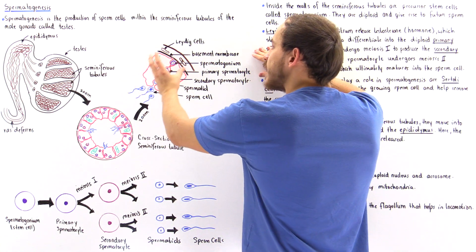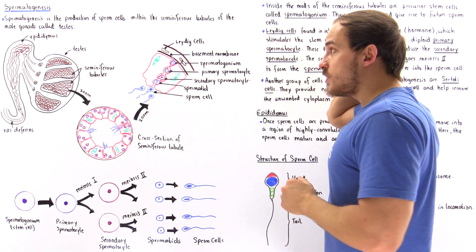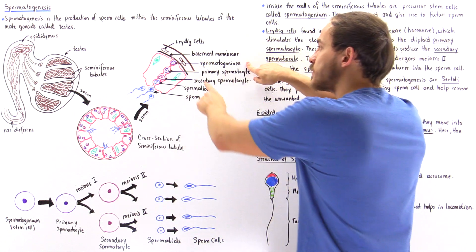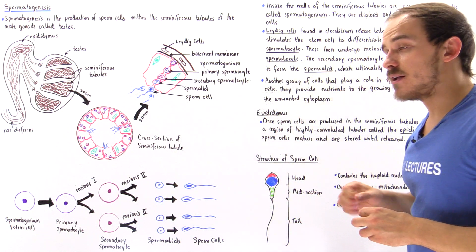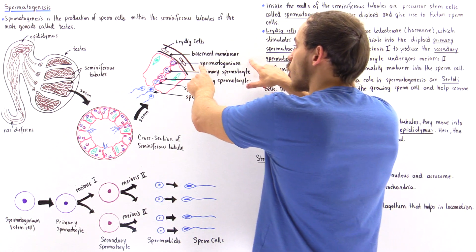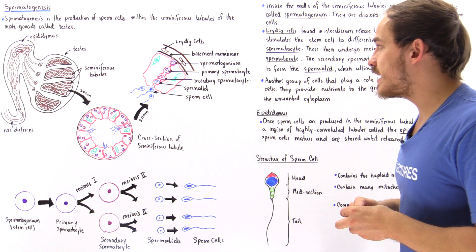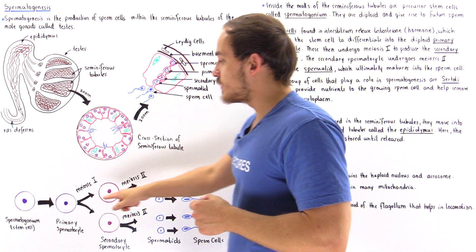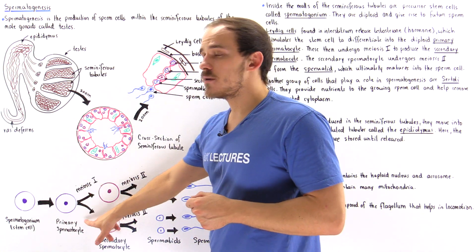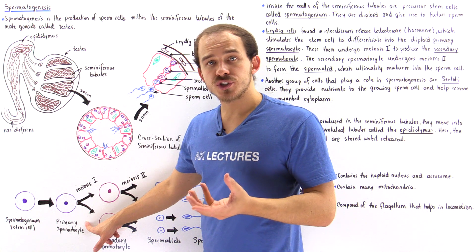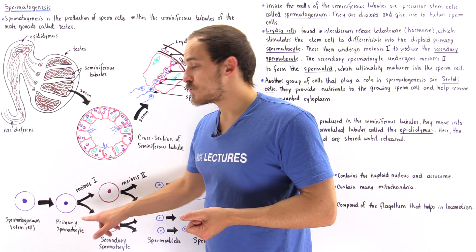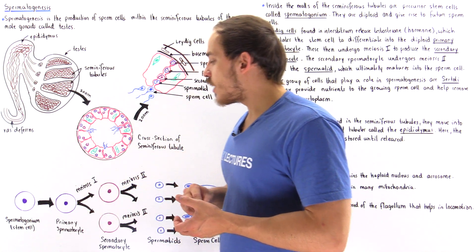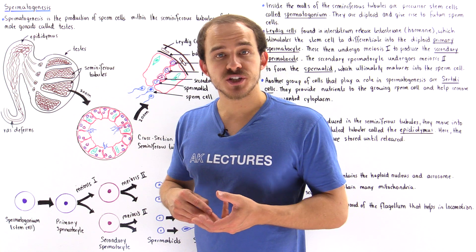Deep inside the wall of the seminiferous tubule are the stem cells of the male gonads, known as spermatogonium. Spermatogonium are diploid cells, meaning in humans their chromosome number is 46. When Leydig cells produce testosterone, it stimulates the spermatogonium to differentiate into the primary spermatocyte, also a diploid cell containing 46 chromosomes.